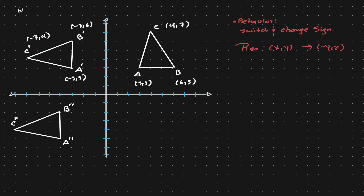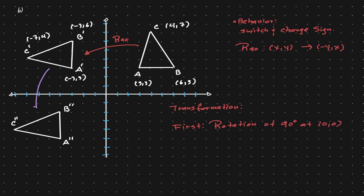So we have identified the first transformation. It is a rotation of 90 degrees. Now let's think about what needs to happen for the upper left triangle to land exactly on the bottom triangle, in order to identify the second transformation.